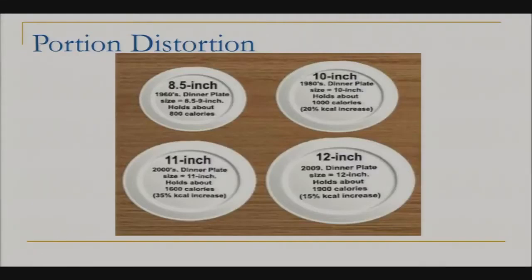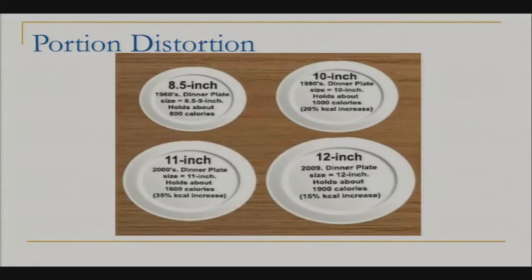Another thing we're up against is portion distortion. A typical dinner plate in the 1960s was 8.5 inches and held 800 calories — what we'd now consider a salad or appetizer plate. A dinner plate today is about 12 inches and holds 1,900 calories — more than double. But as our portions have increased, we haven't gotten more active, so we're not burning those extra calories off, and that's what's leading to greater weight gain.